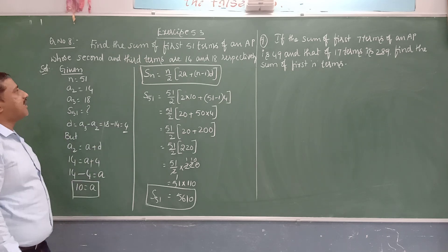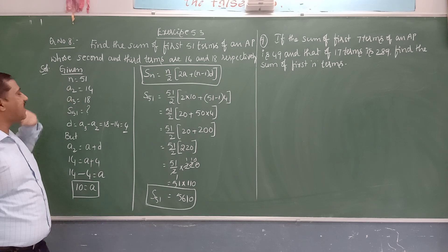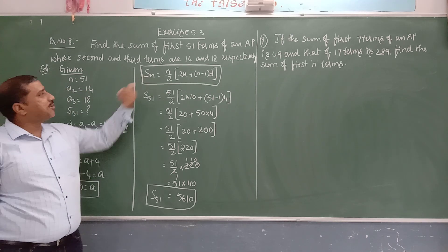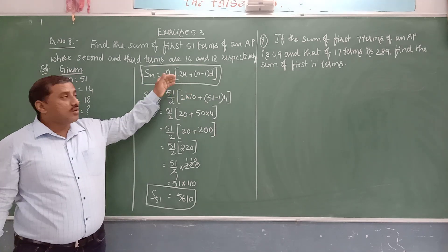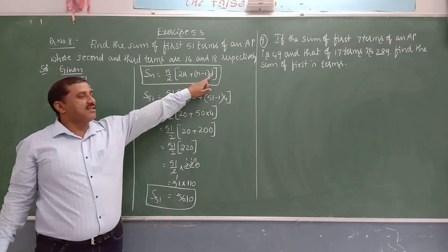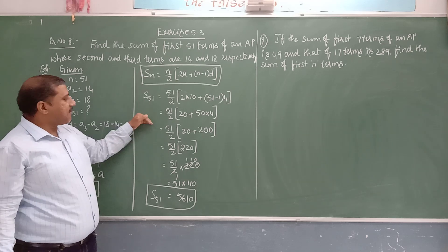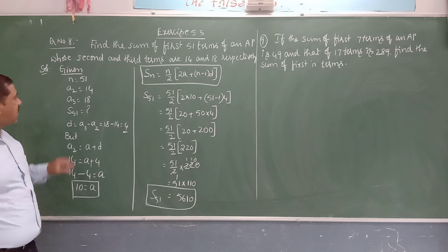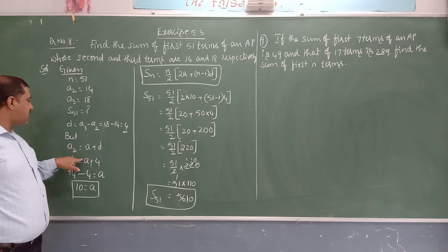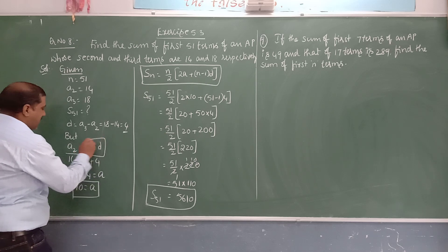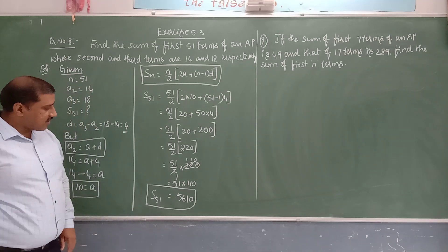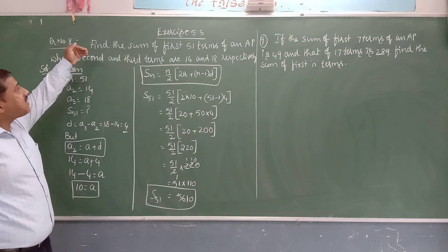To summarize question 8: consecutive terms a2 = 14 and a3 = 18 were given along with number of terms n = 51. We used the formula Sn = n/2 × (2a + (n−1)d). Since a and d were unknown, we first found d from consecutive terms, then found a by substituting into a2 = a + d, then computed S51 = 5610.